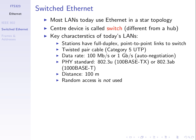Most LANs today use a star topology. We have a special device — here's a small home or office switch with eight ports on the back. You plug your LAN cable into one of those ports and the other end into your PC or laptop. Your second PC or laptop connects via another LAN cable to the switch. All stations connect via point-to-point links to the switch, which in this case can support eight stations connecting.